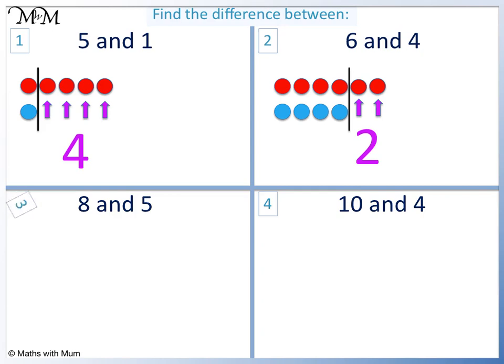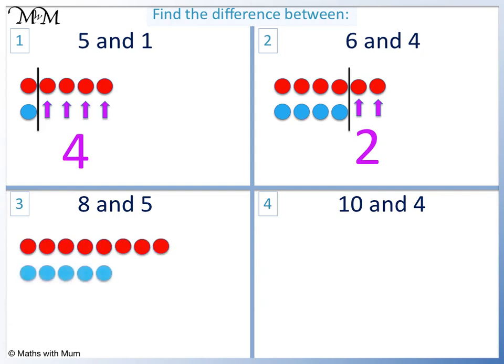Question 3. Here is 8 and here is 5. Counting on, we have 1 2 3. The difference is 3.